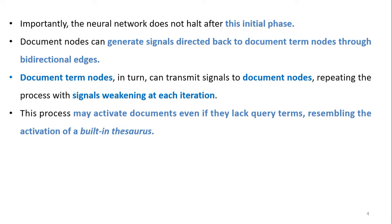The neural network does not halt after this initial phase. Document nodes can generate signals directed back to the document term nodes through bidirectional edges, and from document term nodes again to document nodes, repeating the process with signal weakening at each iteration. After the first iteration, there is a continuous transition between document term nodes and document nodes. This process may activate documents even if they lack the query terms, meaning documents can be retrieved even if a particular keyword is not present in them.